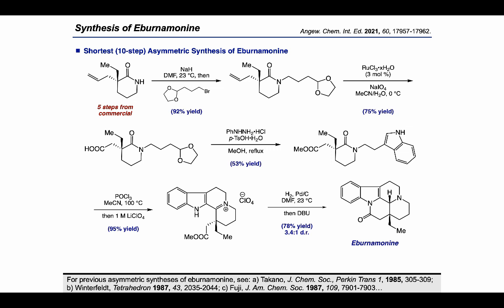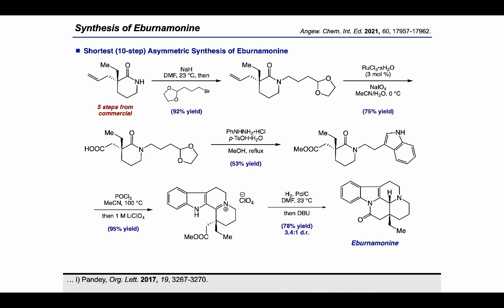To recap: we have completed the total synthesis of Ibernamonine. From the quaternary lactam building block — prepared in 5 steps from commercially available material — we performed N-alkylation, oxidative cleavage, and Fischer indolization to access the functionalized lactam for Bischler–Napieralski cyclization. The cyclization was then performed, followed by iminium reduction with in situ lactamization, concluding our 10-step enantioselective total synthesis of Ibernamonine. This route represents the shortest asymmetric synthesis of this natural product to date.